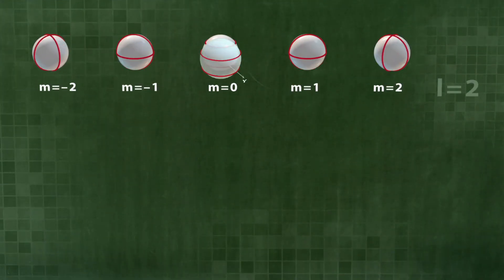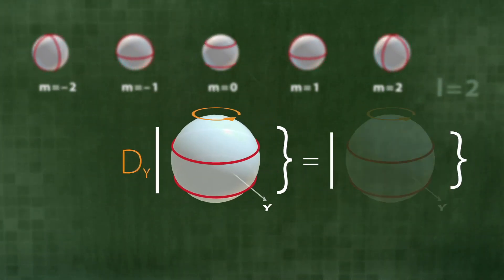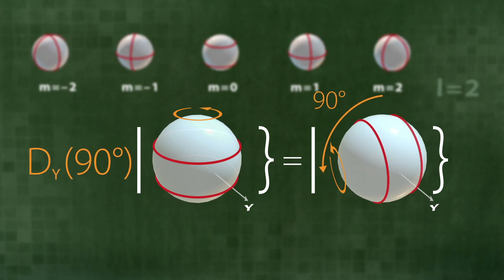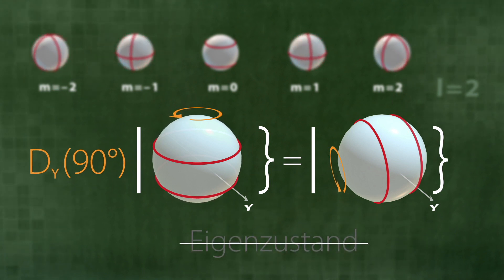What happens when we rotate one of these states about the y-axis? Let us take M equals zero. In this case, the state does change. It is thus not an eigenstate with regard to the operator rotation about the y-axis. This is also true for all M.